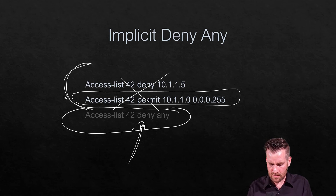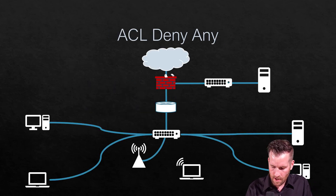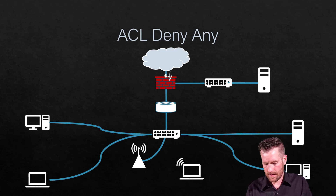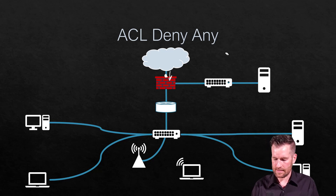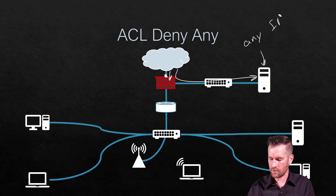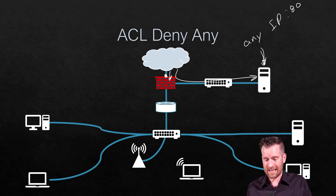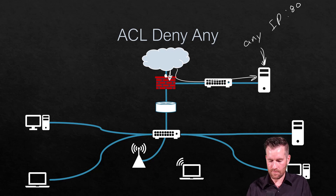When an access control list is applied to the ingress of a firewall, it might allow any traffic to a web server on port 80, but all other traffic gets denied because of that implicit deny any at the end. That traffic gets terminated.